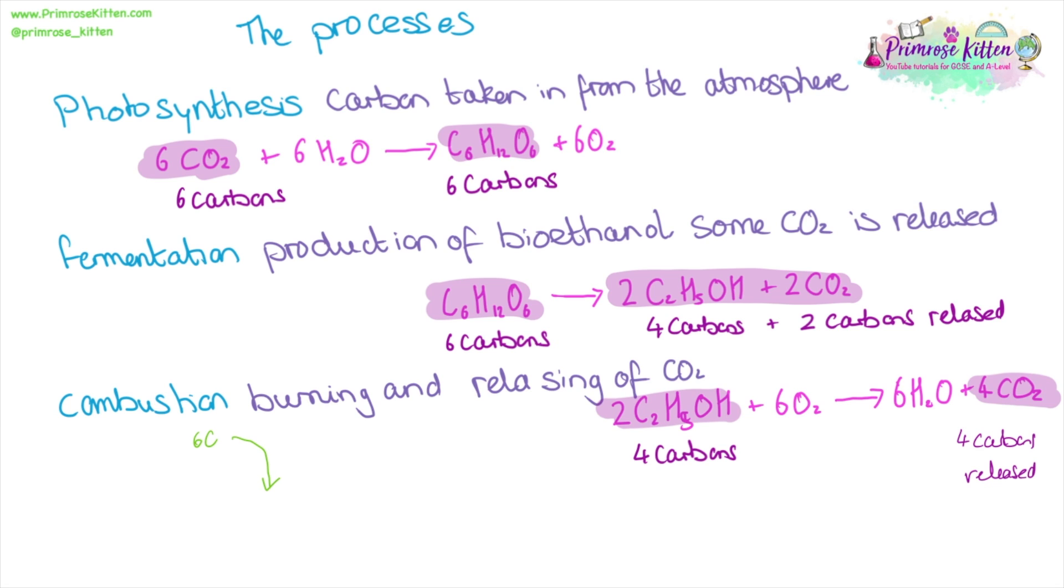So we have six carbons going into this process via photosynthesis. Four carbons are following the process through as the ethanol, and two carbons are lost during fermentation. Two carbons are released as carbon dioxide. The four carbons in ethanol go on to combustion, and then four are released in carbon dioxide. So this reaction is called a carbon neutral reaction. However, that is not the whole story.